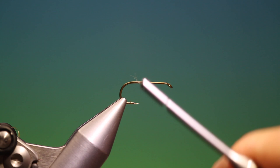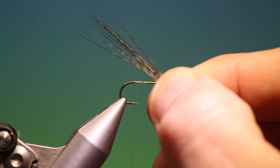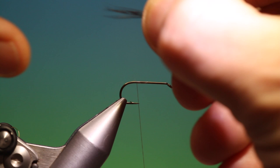Then what we want is a little bunch of moose body. This entire fly is just deer hair. So I want to measure the tail.